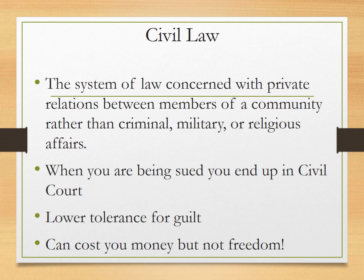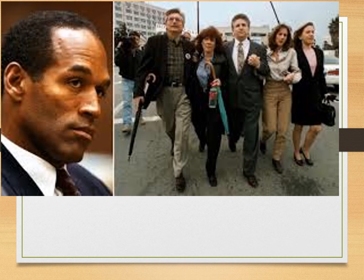Civil law is the system of law concerned with private relations between members of the community, rather than criminal, military, or religious affairs. When you are being sued, you end up in civil court. In civil court, there's a lower standard for guilt — it can cost you money, but not your freedom. For example, if your neighbors chop down one of your trees on your property line, you take them to civil court. After O.J. was found not guilty in criminal court, the family of one of his alleged victims sued O.J. in civil court and actually won the judgment. That jury decided there was reasonable evidence to assume O.J. was guilty, and he would have to pay the family millions of dollars. However, O.J. declared bankruptcy, and he has a pension from the NFL which cannot be touched by these lawsuits in the state of Florida. So O.J. actually lives free today in Florida and does not pay this family any money.